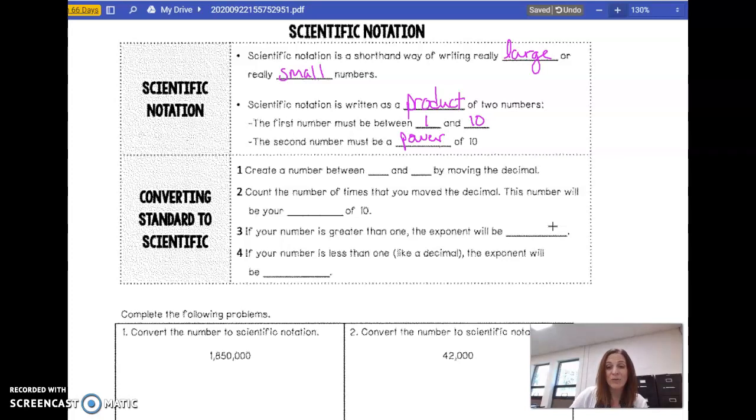So how we convert a number from standard form, standard form is how we're used to writing things, into scientific notation, is we create a number between 1 and 10 by moving the decimal. And I'll show you how to do that in a second. Remember, every number has a decimal point. If it's not there, it comes at the end.